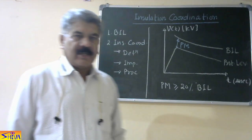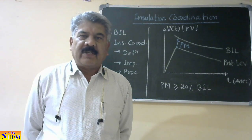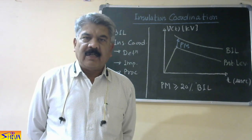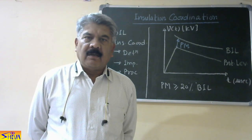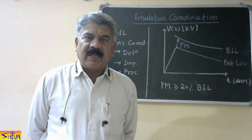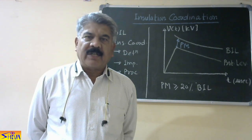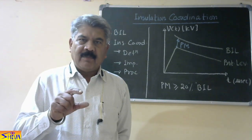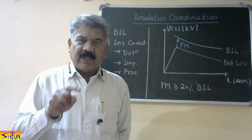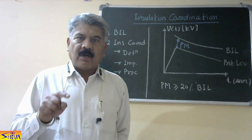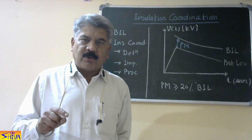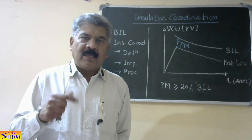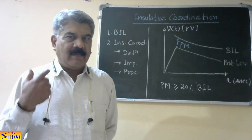Now let us see what is insulation coordination. Insulation coordination is the process of coordinating the insulation level of the equipment or system being protected with the protection level of the lightning arrester. We have to coordinate between the insulation of the system being protected and the protection characteristic or protection level of the protective device, that is the lightning arrester.